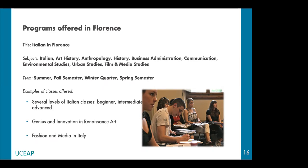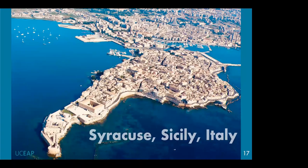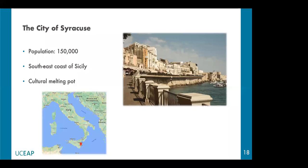Our last stop in Italy is the beautiful town of Syracusa, located in Sicily — the biggest island in Italy. Syracusa is a small town in the southeast of the island, famous for its rich Greek and Roman history, culture, amphitheaters, architecture, and as the birthplace of the mathematician and engineer Archimedes. It has a population of about 150,000 people and is considered the most beautiful city on the island. Given the history of the island and its relationship with immigration, Syracusa represents one of the few Italian cultural melting pots.